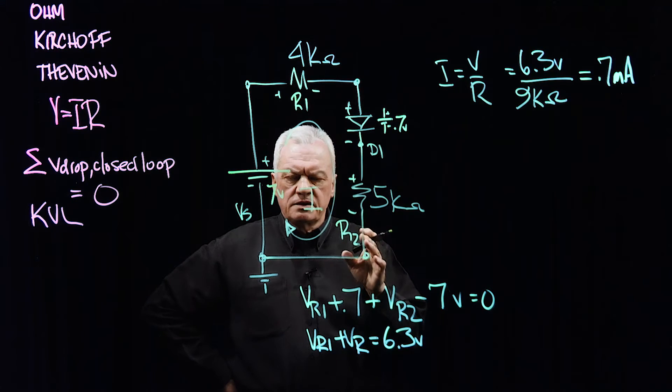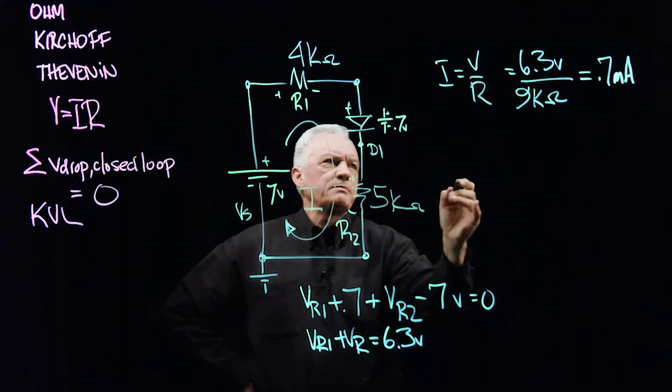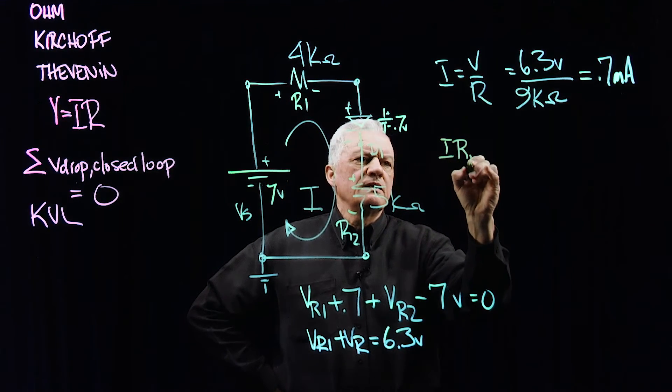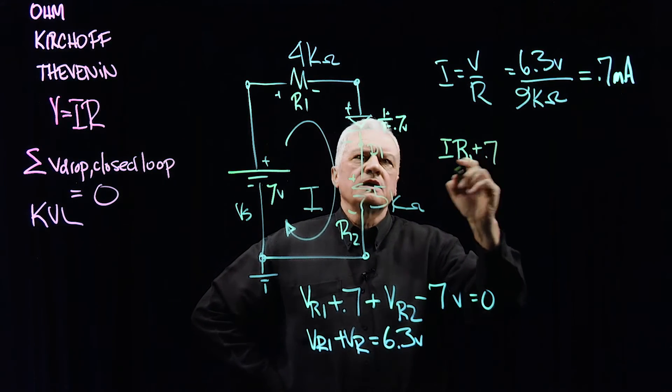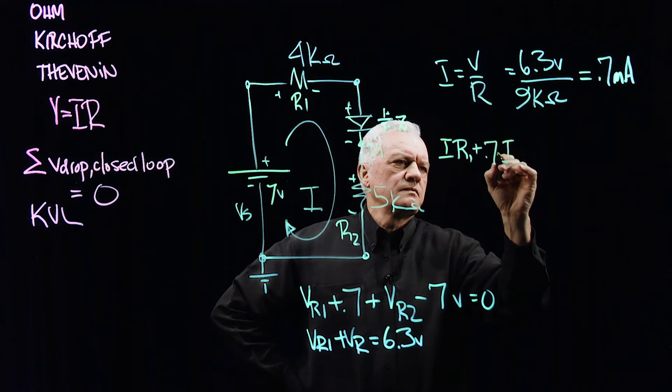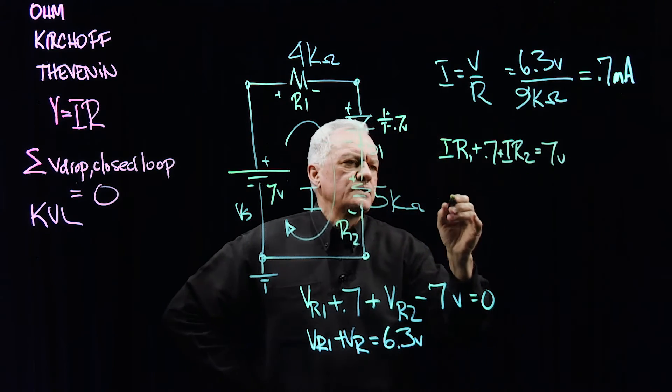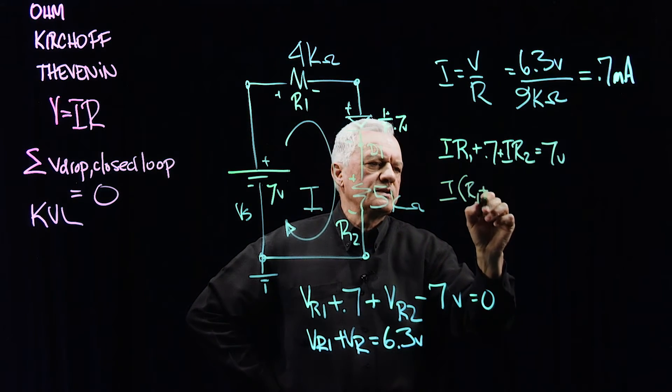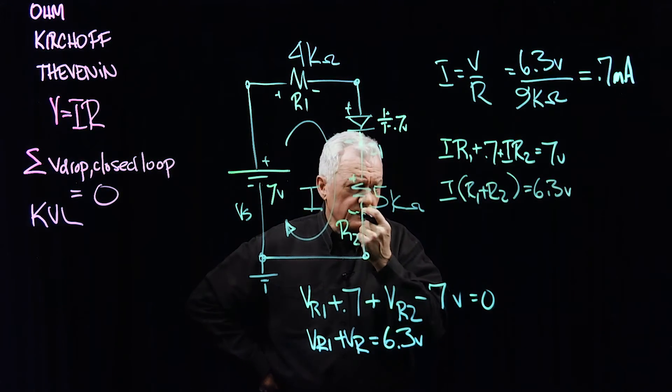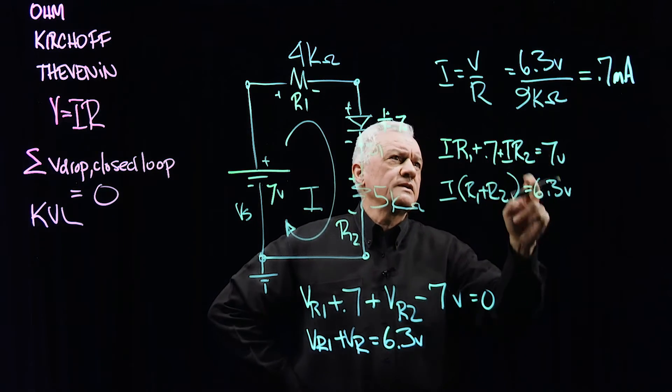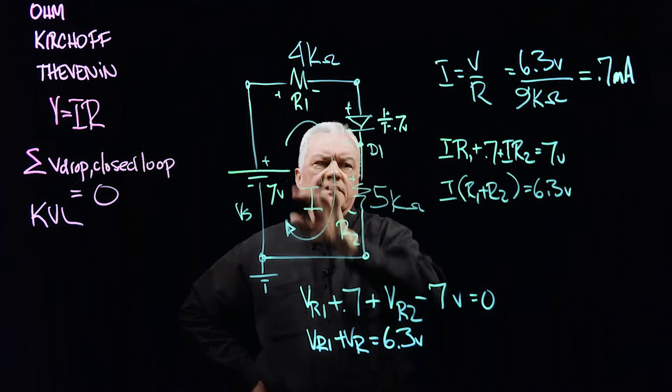All right? According to Kirchhoff, then we have this voltage, which happens to be I times R1, plus the 0.7, plus the I times R2. It was equal to 7 volts here. And so I times R1 plus R2 is equal to 6.3 volts, as we had there. And if you do this math, which we did over there, we came up to 0.7 milliamps.